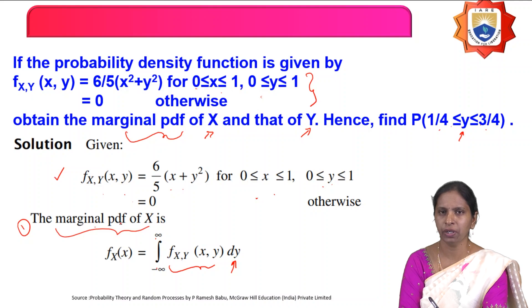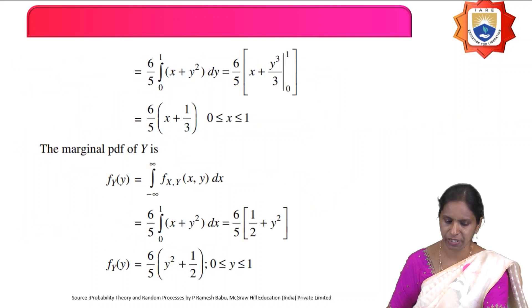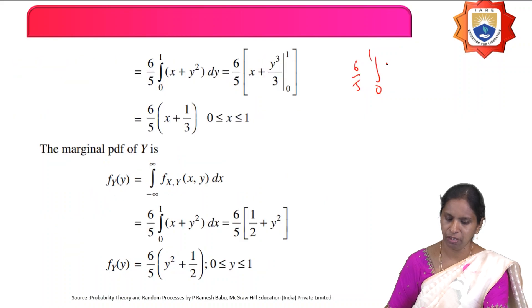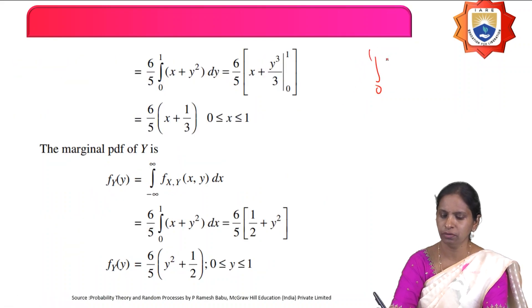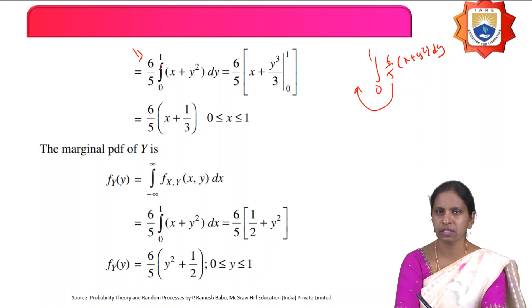The marginal PDF of x is f_x(x) = integral from minus infinity to infinity of f(x,y) dy. The limits of y are 0 to 1, and in this range the density function is (6/5)(x² + y²). Therefore, we write (6/5) times the integral from 0 to 1 of (x² + y²) dy. Since 6/5 is constant, bring it outside.